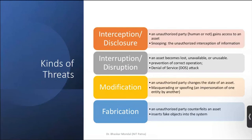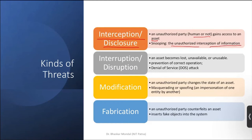Then, kinds of threats. The first kind is interception or disclosure. In this, an unauthorized party — human or machine — gains access to an asset: a private network, network resources, or information. They can snoop it — snooping is the unauthorized intercepting of information. After interception, they do interruption and disruption, where an asset becomes unavailable or unusable.